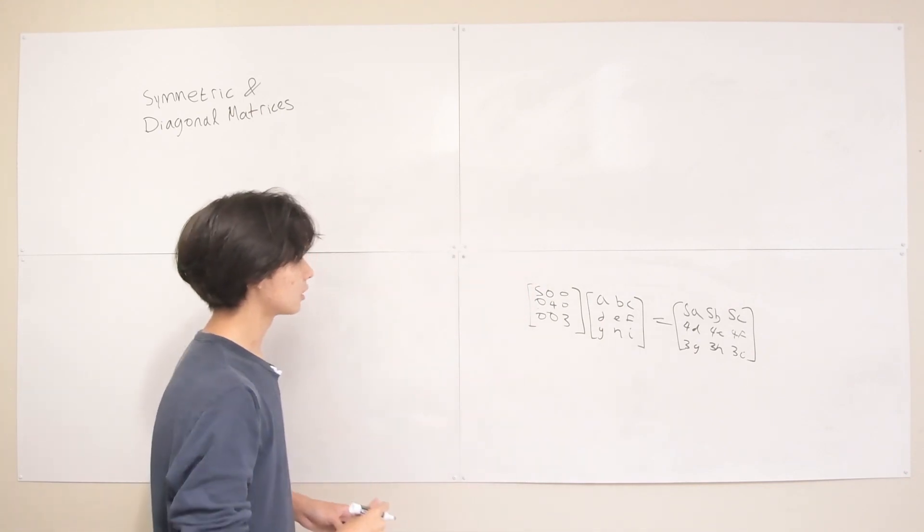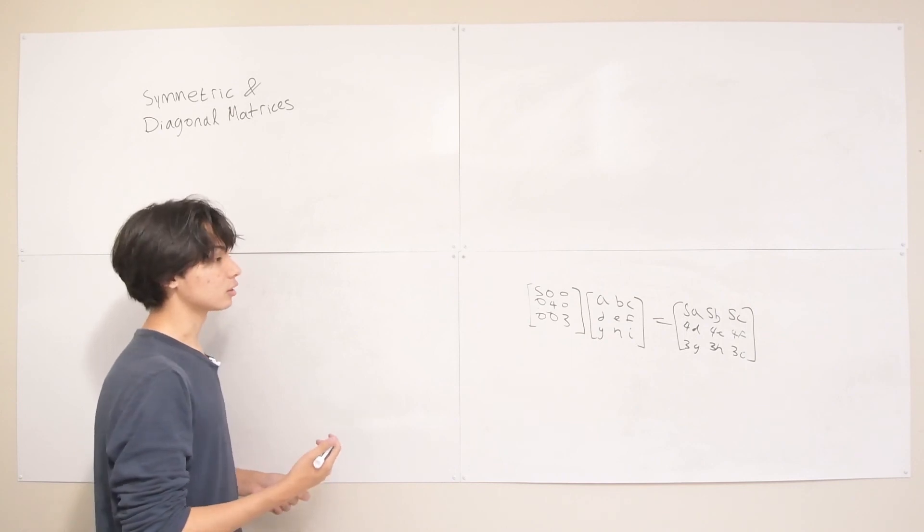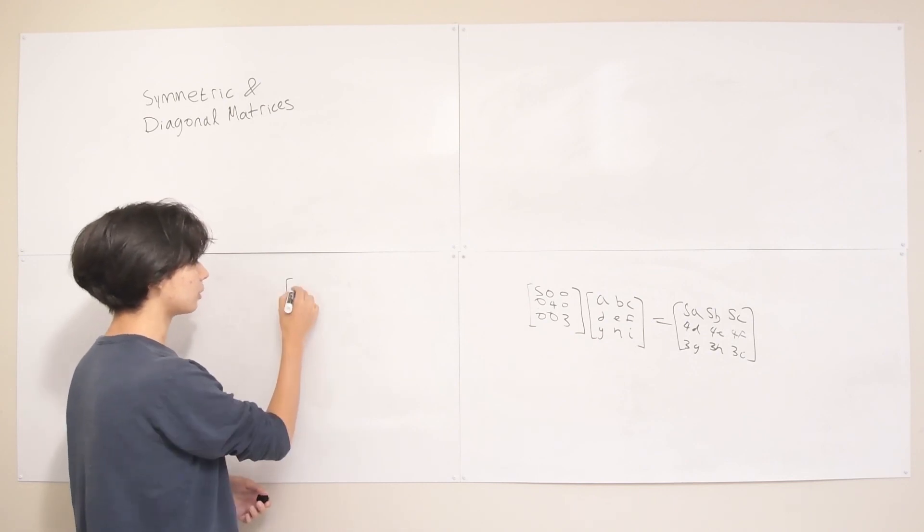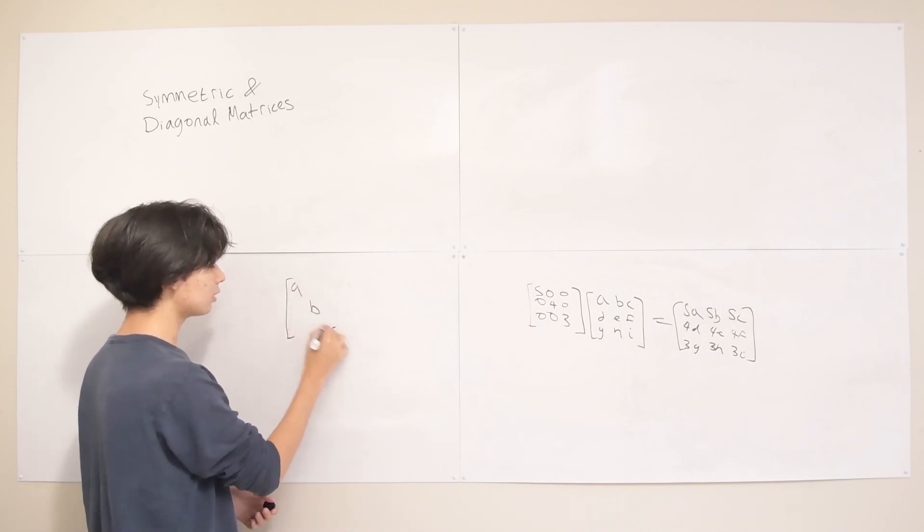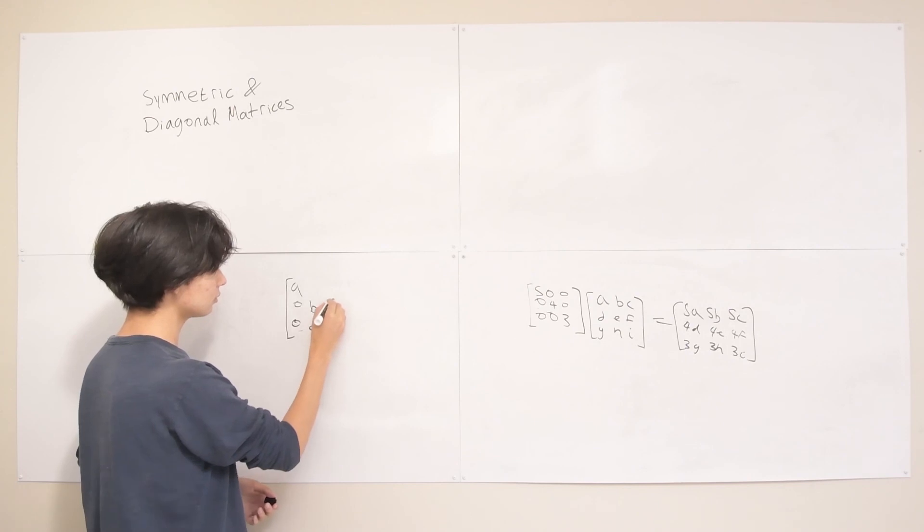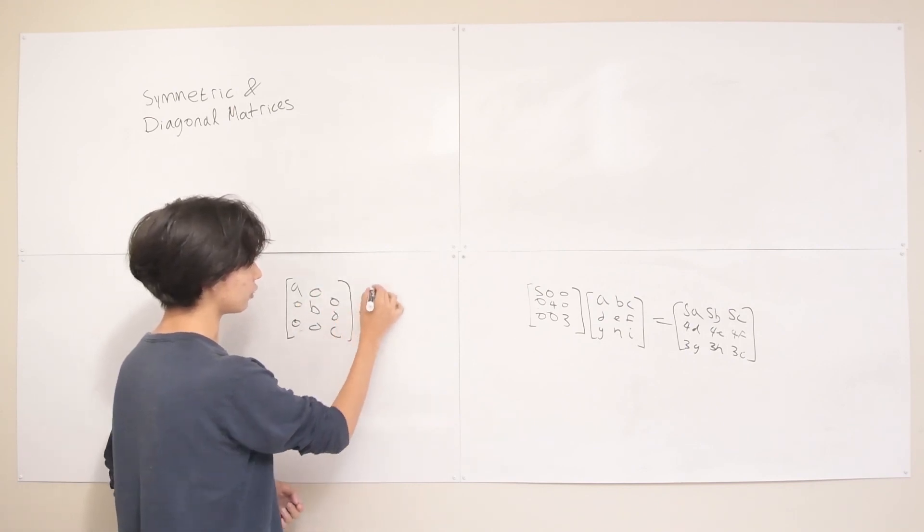One more thing with diagonal matrices that's really important and easy and nice is that when we take the inverse of a diagonal matrix, we just take the reciprocals of all the numbers across the diagonal. So say we have some diagonal matrix A, B, C, and then 0s everywhere else. If we have 0s everywhere else, we just take the inverse by taking the reciprocals of the things across the diagonal.